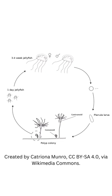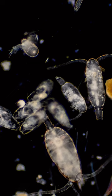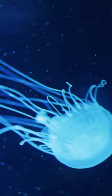Polyps are sessile, meaning that they are attached to the ocean floor. They feed on plankton and other small organisms. After a period of time, polyps will bud off medusa, which will then swim away and begin their own reproductive cycle.